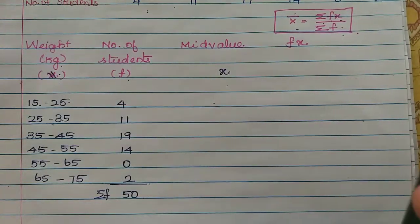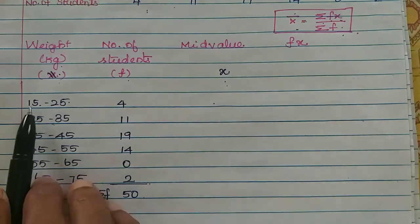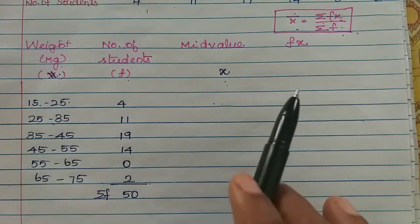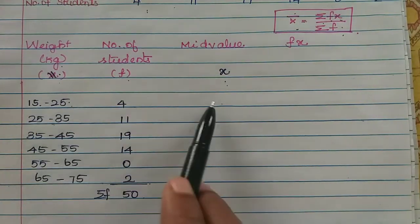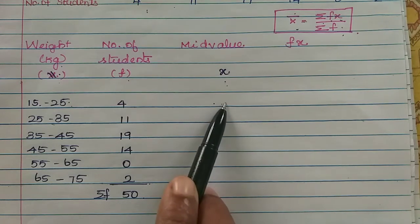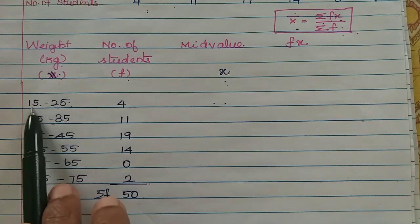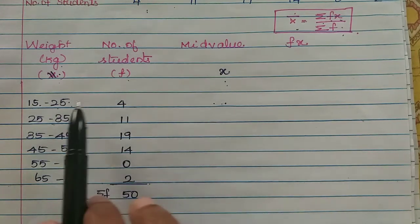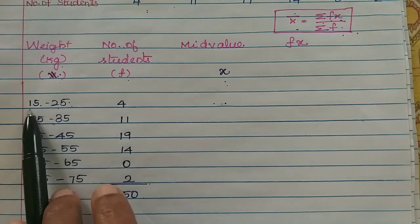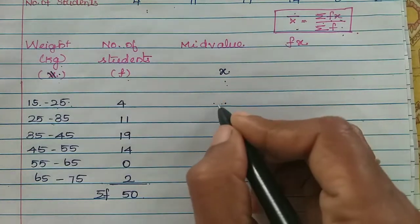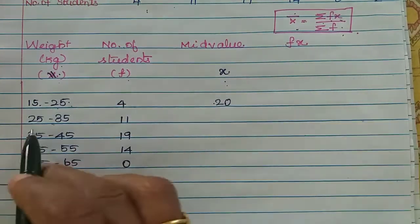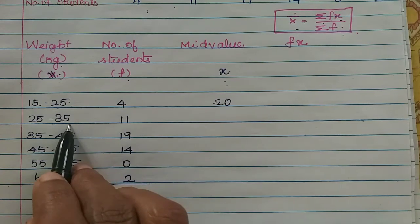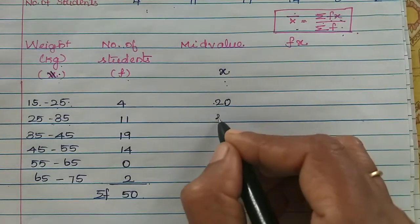What is the mid value x? The class interval mid value x is the upper limit and lower limit added, then divided by 2. 25 plus 15 is 40, divided by 2 you will get 20. Then 25 plus 35 is 60, so 60 divided by 2 is 30.